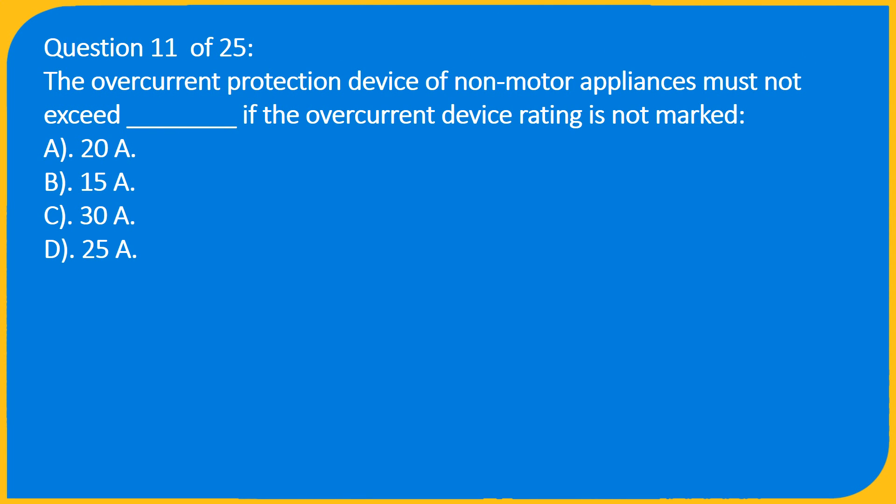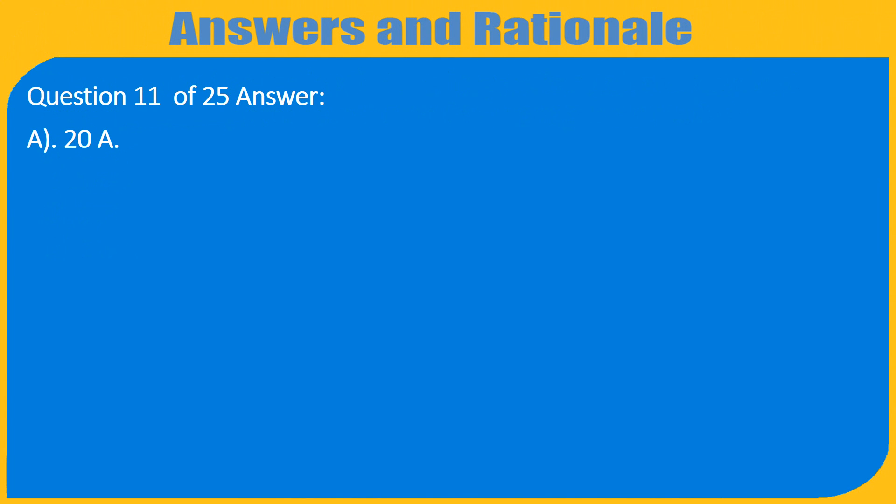Question 11 of 25: The overcurrent protection device of non-motor appliances must not exceed what amperage if the overcurrent device rating is not marked? A. 20A, B. 15A, C. 30A, D. 25A. Answer: A. 20A.